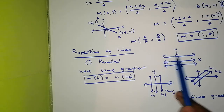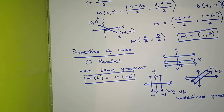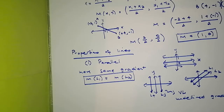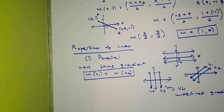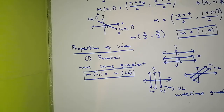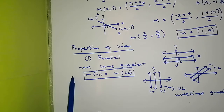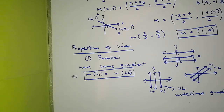I'll link a video where you can learn more about horizontal and vertical lines. But the key takeaway is: whenever you're dealing with parallel lines, the first thing that must come to your mind is that their gradients are equal. If one line's gradient is 10, the other must also be 10.